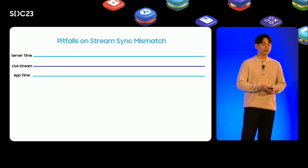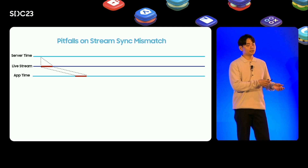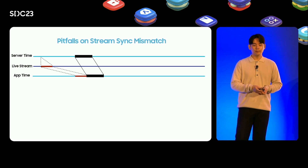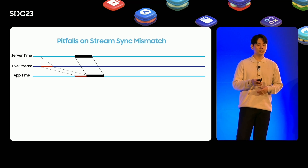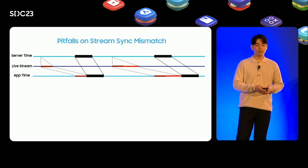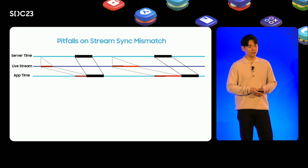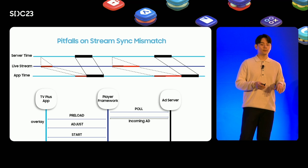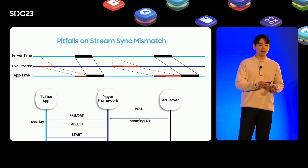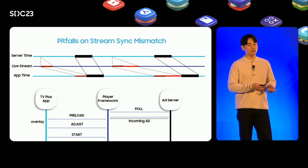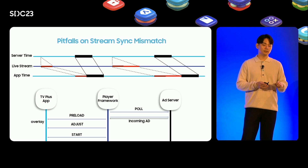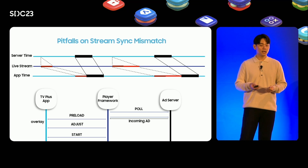As seen from this timeline, if there are sync issues related to server and live time, the stream may correct itself by buffering and catching up. But the app does not recognize this, and this gap may stack over time. This may not be noticeable from the beginning, but it will be devastating and harm the user experience if the interactive ad is not in time with the stream. To solve this problem, the player framework periodically corrects the time through server polling, and the app uses this to synchronize overlays. Thankfully, we were able to complement this process by working closely together with excellent engineers on the player and media streaming engine team. Through these efforts, Samsung TV Plus was able to provide interactive ads that combine overlay and stream simultaneously.